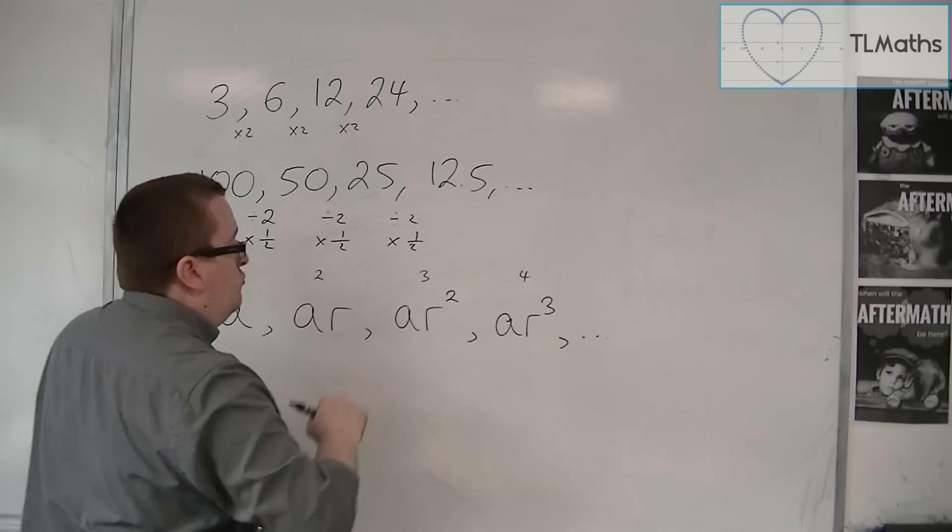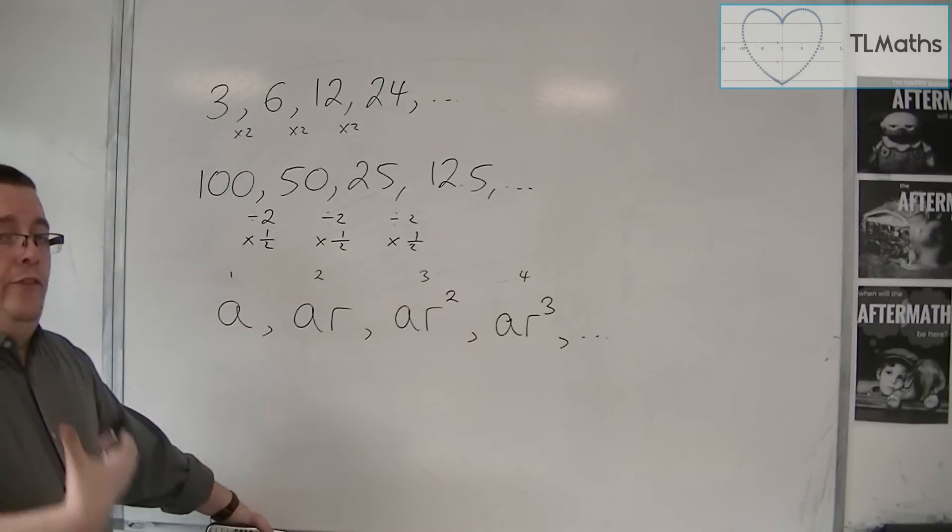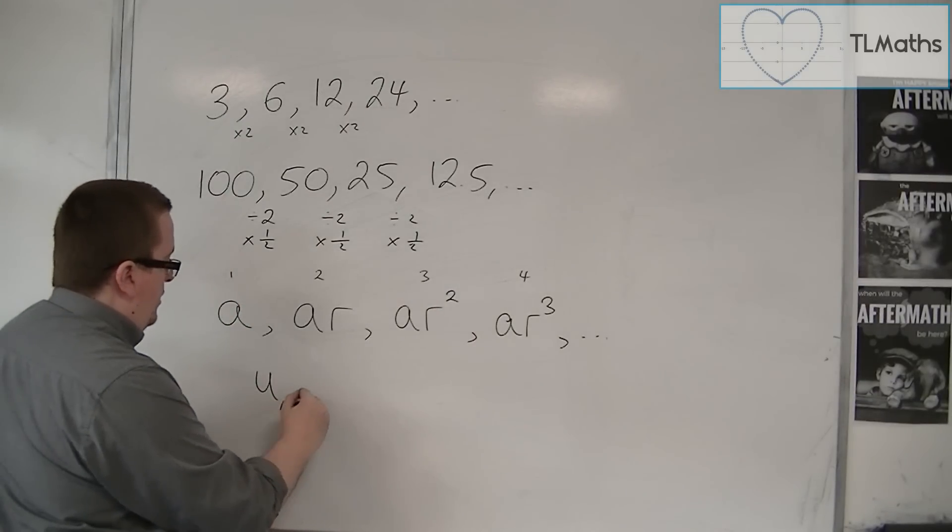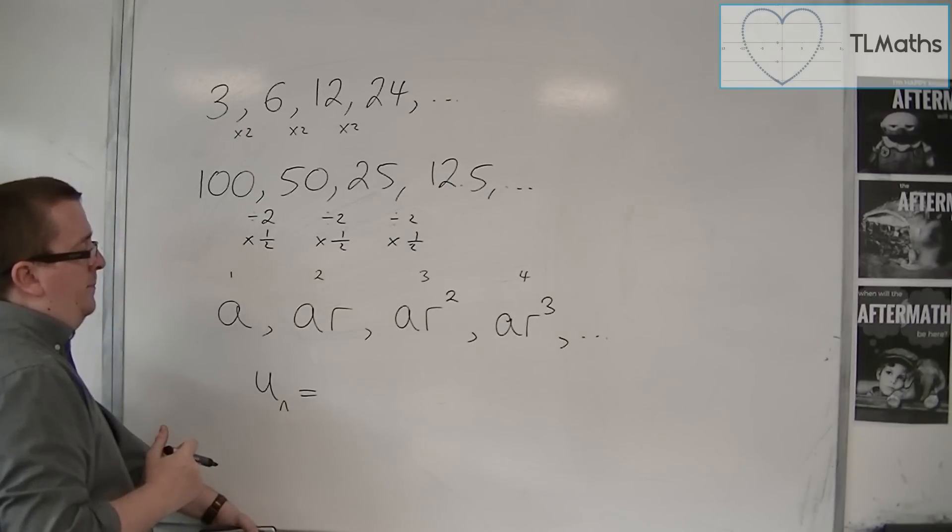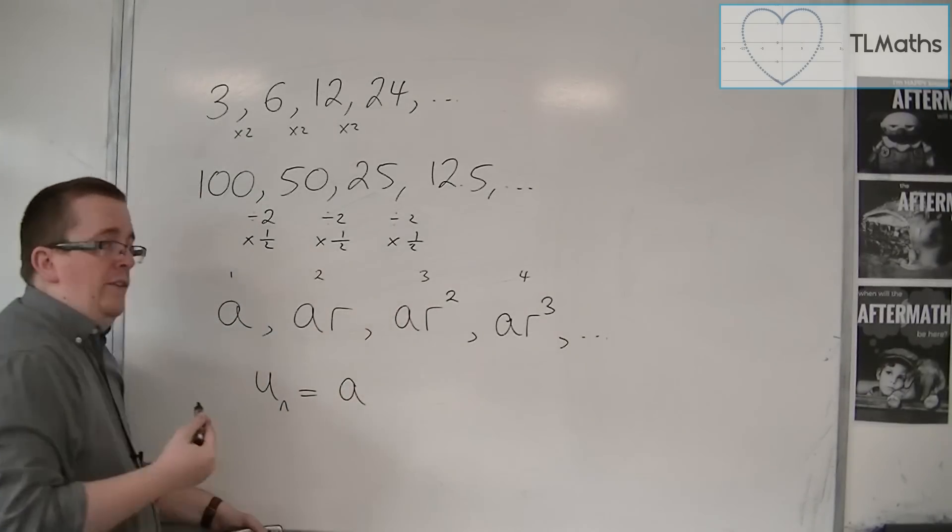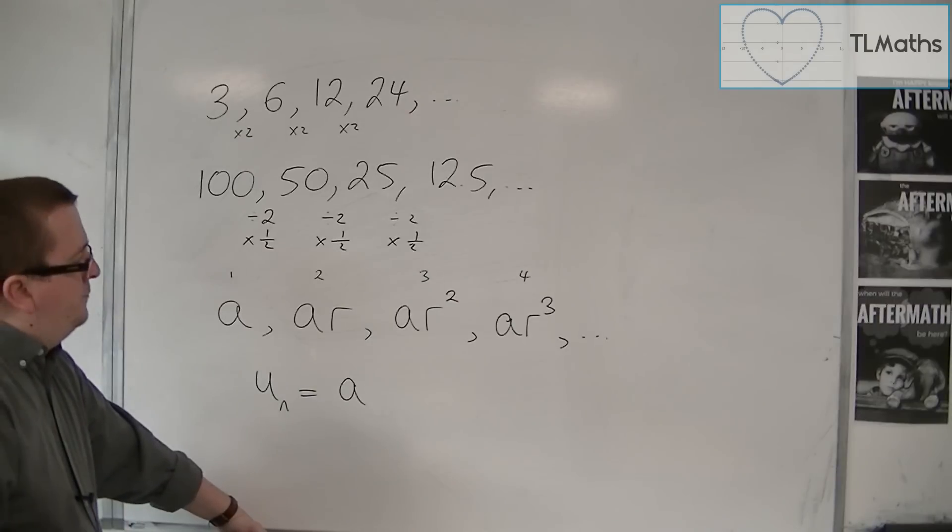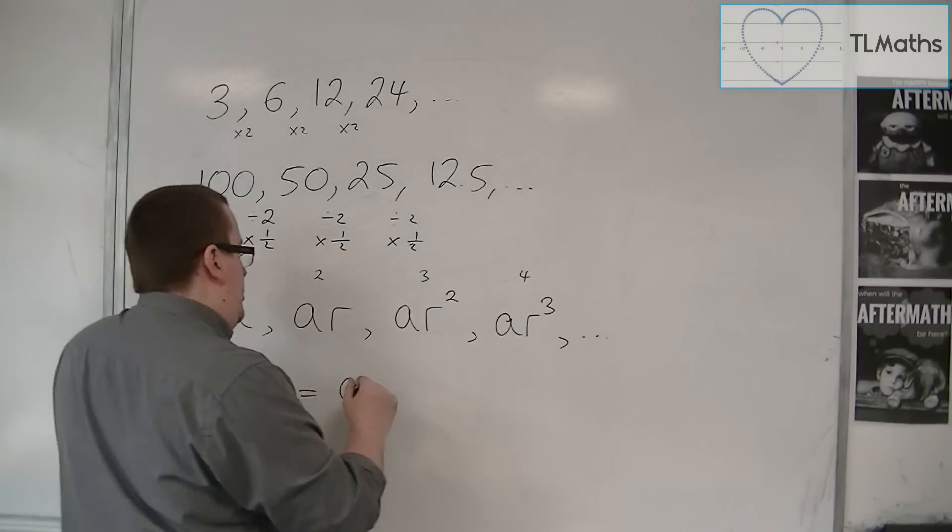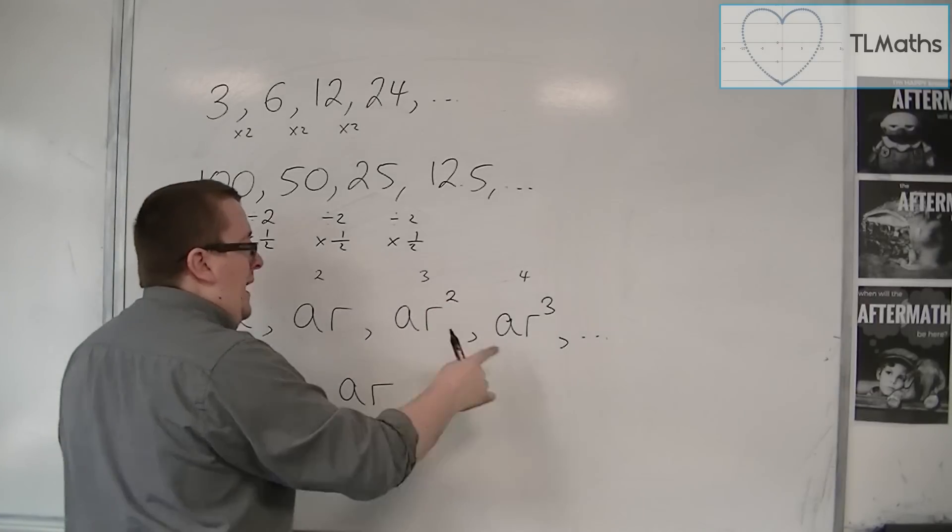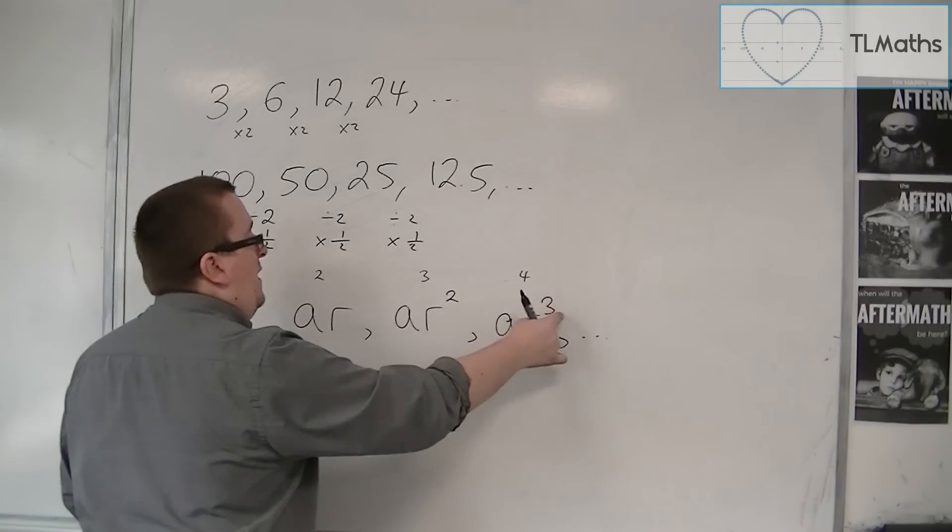If I'm going to write down an nth term for this sequence, so u_n, an nth term, each term has an a in it. So my nth term has to have an a in it. And each term has an r, where the index, the power of the r, is always one less than the position.